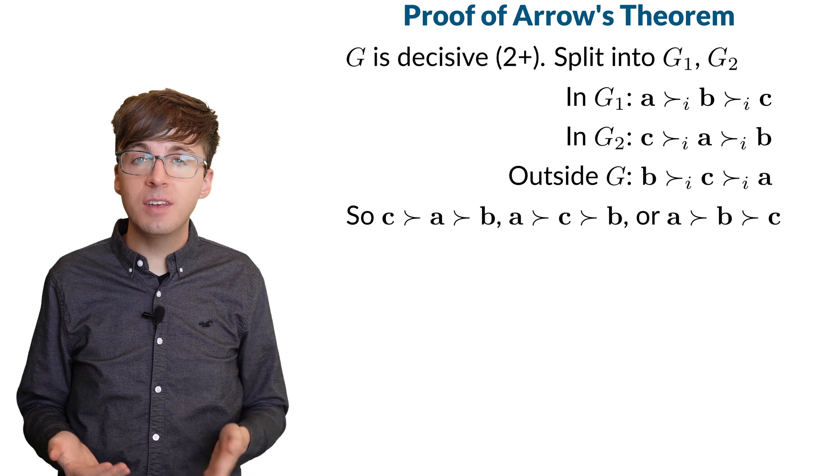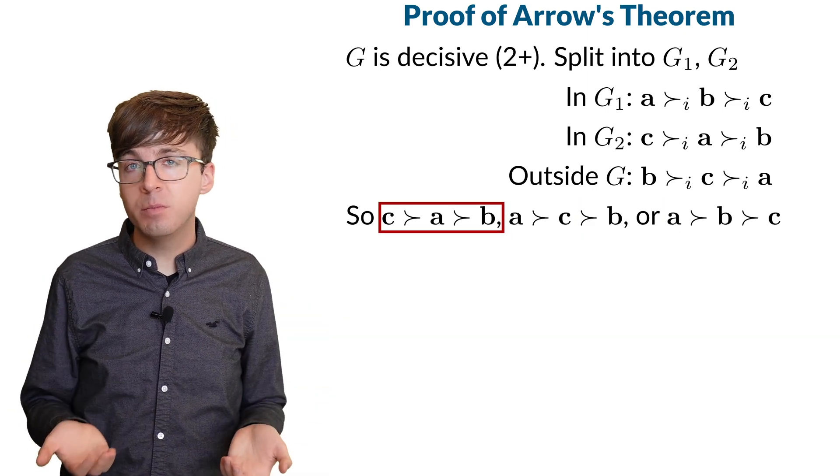So there are three possible positions where C can go. In each of these cases, either A is above C, or C is above B, or both.